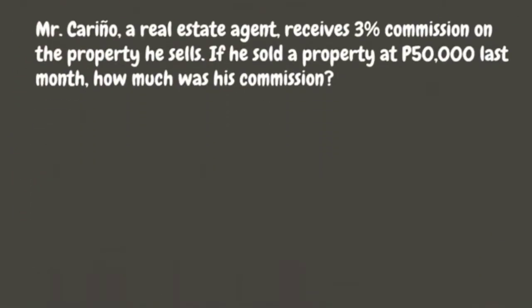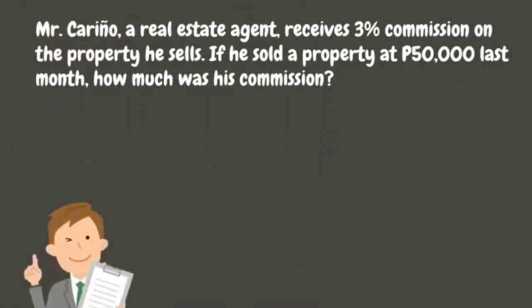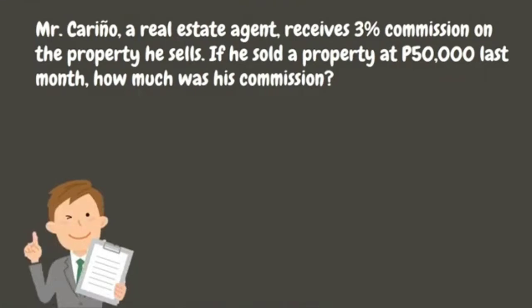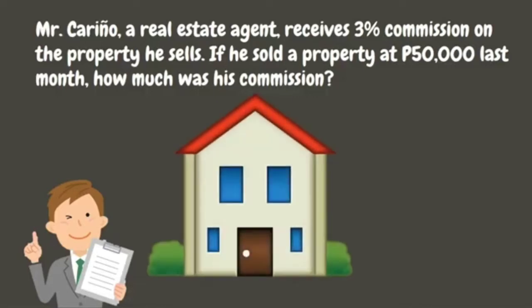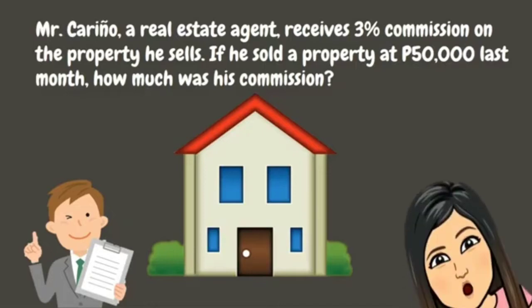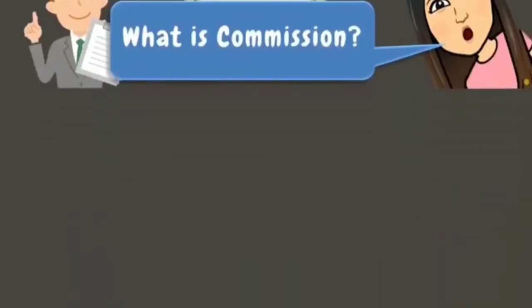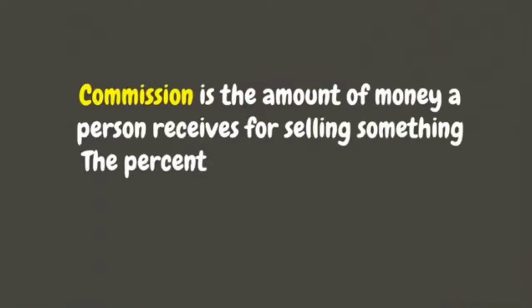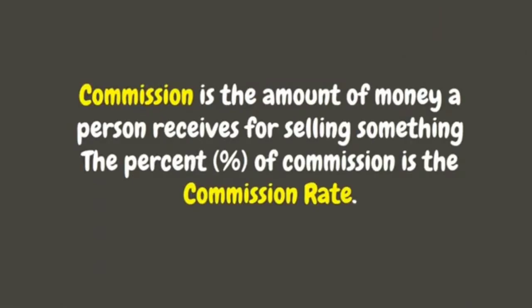Let's have our first example. Mr. Carino, a real estate agent, receives three percent commission on the property he sells. If he sold the property at fifty thousand pesos last month, how much was his commission? But wait — what is commission? Commission is the amount of money a person receives for selling something. The percent of commission is the commission rate.